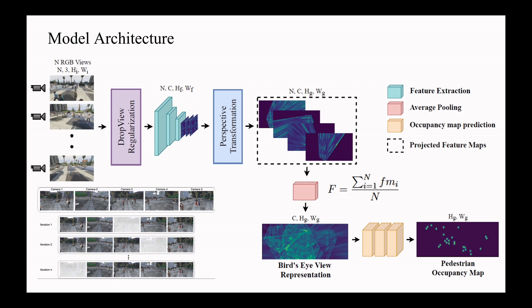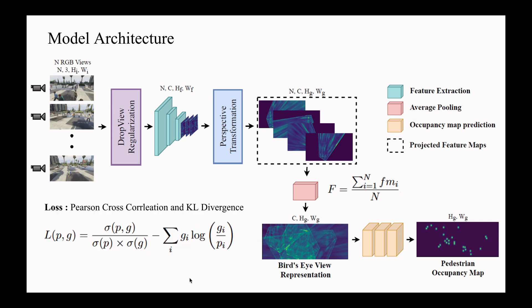Drop view regularization technique is used while training the model, in which we randomly select one camera view to be discarded during training iteration. Finally, the loss function, which is a combination of two losses—Pearson cross correlation and KL divergence—is used for training the model which compares the predicted probabilistic occupancy map and the ground truth map.